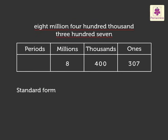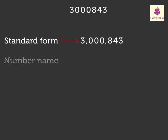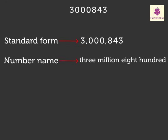Here also, we write the number in the standard form using a comma as 8,400,307. Let us try one more example. We write this number in standard form as 3,000,843. We read this number as three million, eight hundred forty-three. Did you notice? Here, we did not read the place value of the zeros, but we did write them to show the place value. Its number name is three million, eight hundred forty-three.